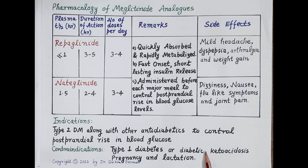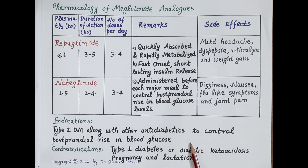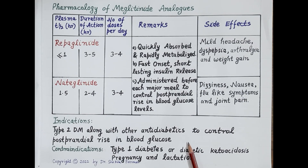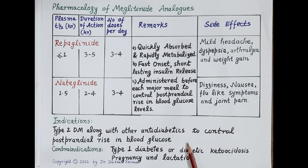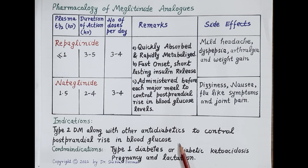This is a brief overview of the pharmacology of sulfonylureas and meglutinide analogs. Please note: information provided in this video is only for academic and informative purposes. For clinical use of these drugs or for the treatment of type 2 diabetes mellitus, consult your physician. Do not self-medicate. If you find the video useful, kindly like, subscribe, and share. Thanks for watching.